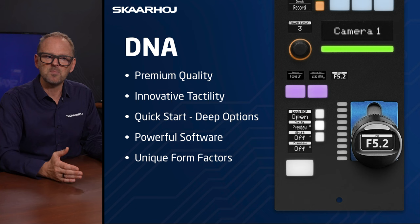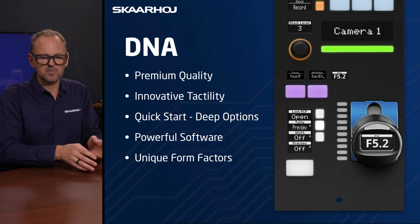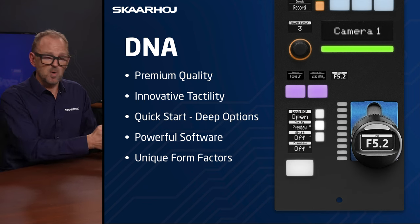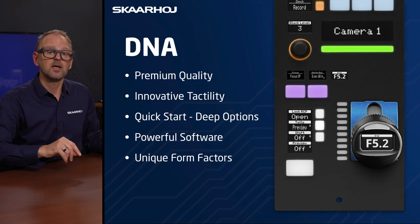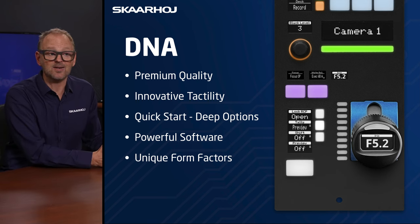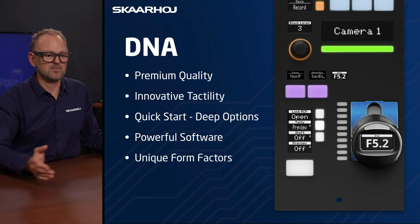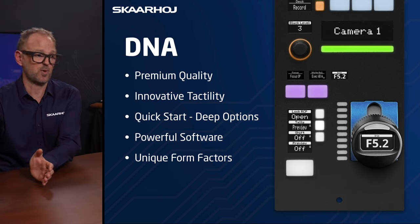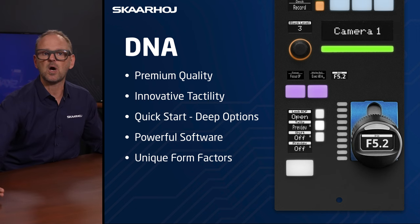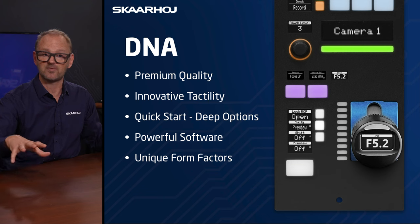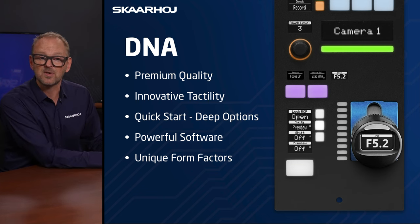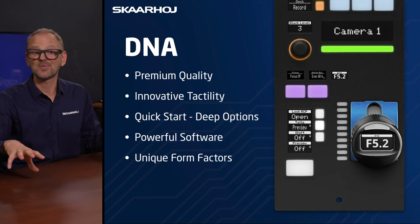If you look at the hardware, we have many unique form factors. We have RCPs for shading base, tabletop units in different sizes, and rack mounted units — small to large. They all can control the same cameras. The idea of offering this many unique form factors is we have different price points, and different sizes that fit different types of customers. But they are all running on the same software platform.